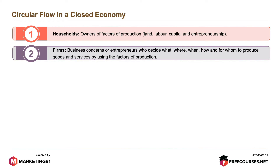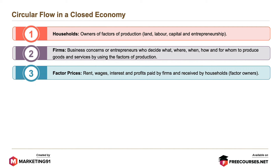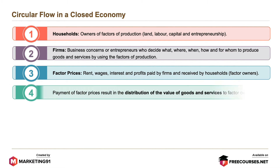Firms are business concerns or entrepreneurs who decide what, where, when, how, and for whom to produce goods and services by using the factors of production. Factor prices include rent, wages, interest, and profits paid by firms and received by households or factor owners. Payment of factor prices results in the distribution of the value of goods and services to factor owners.